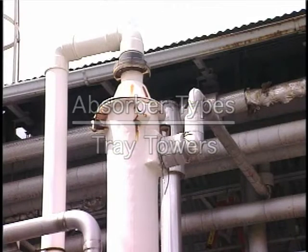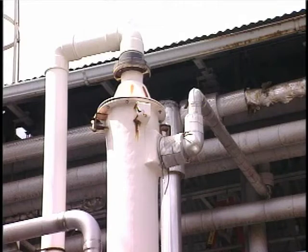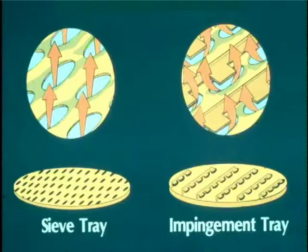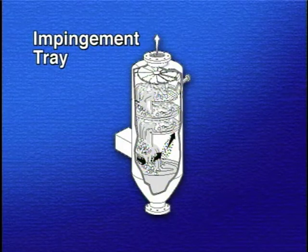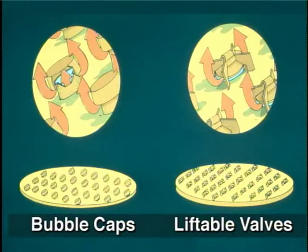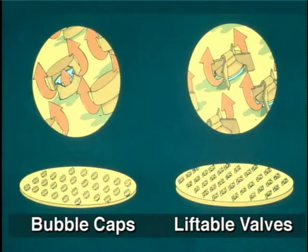The tray tower is a vertical column with one or more trays mounted horizontally inside. The simplest tray is a perforated plate referred to as a sieve tray. Other tray designs include impingement trays that have small impingement targets above each perforation to enhance gas-liquid contact, bubble cap trays that can operate over a wide range of gas and liquid flow rates without adversely affecting collection efficiency, and valve trays that have liftable valves or caps that improve gas-liquid contact when the gas flow rate varies.